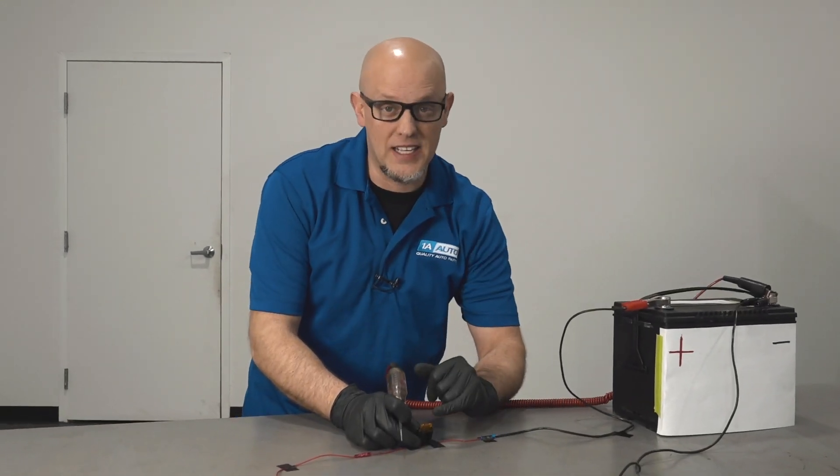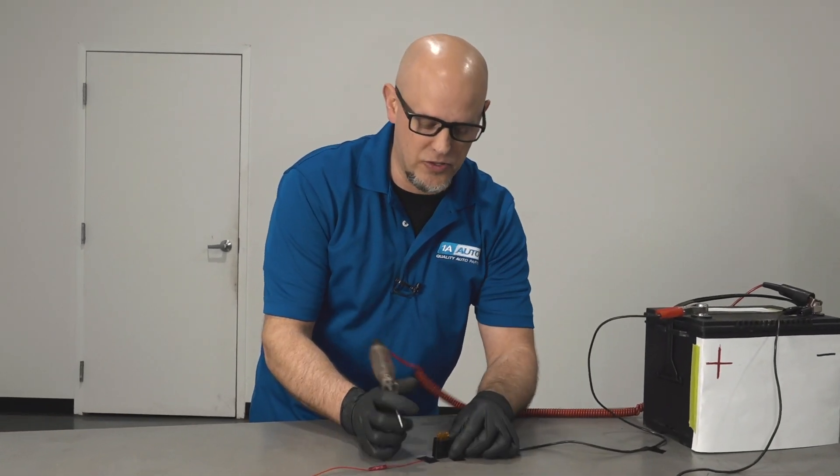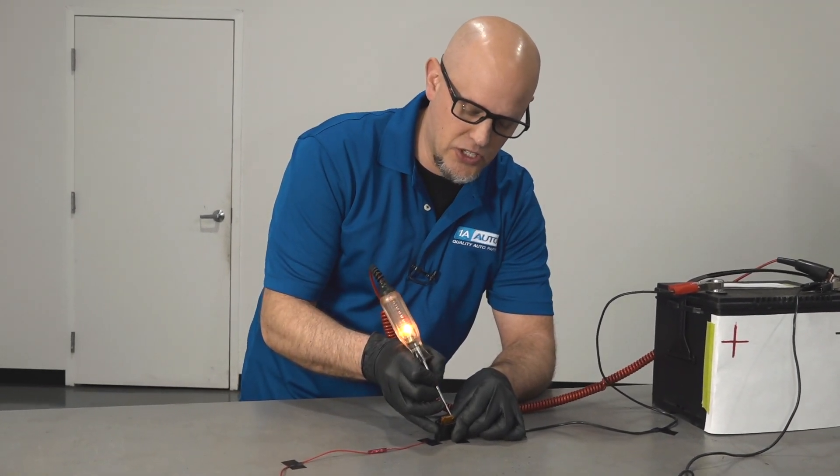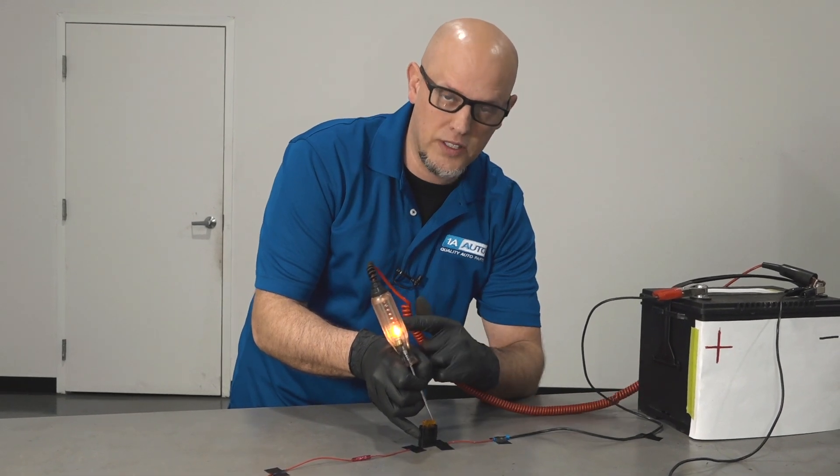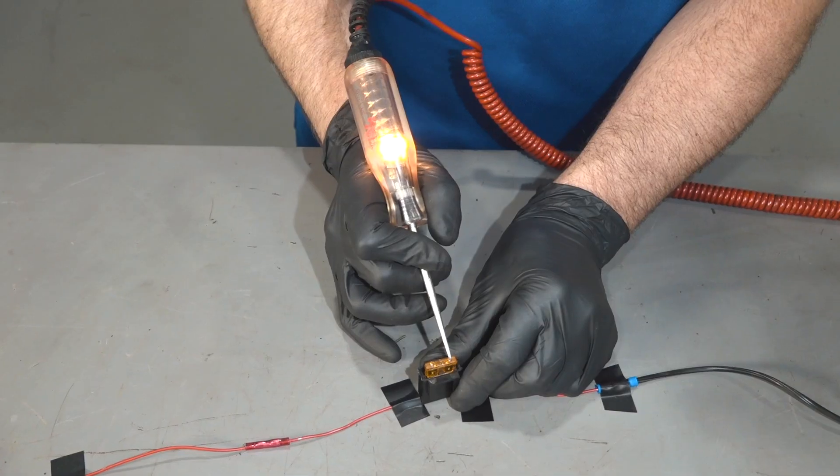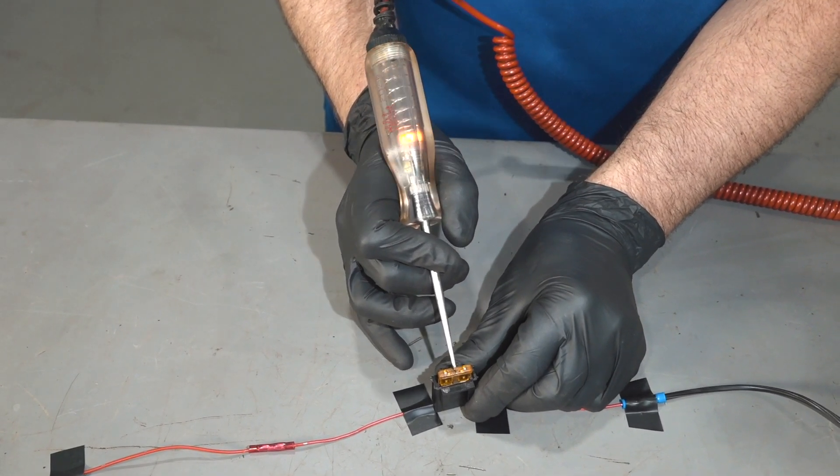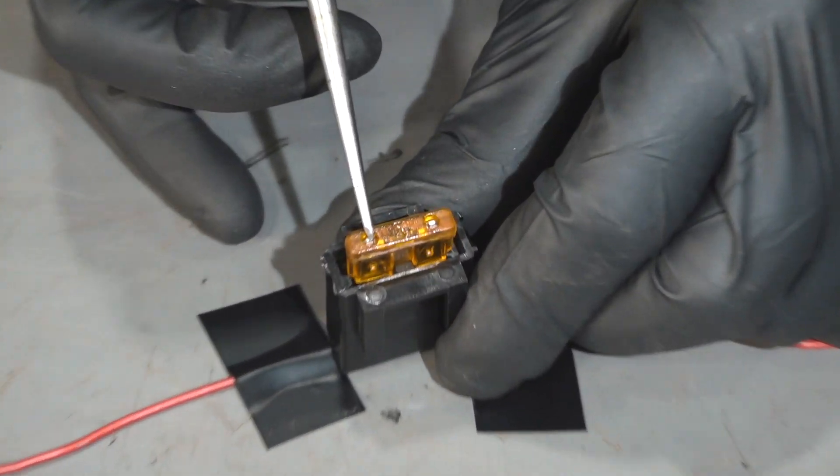When testing a fuse, there are contacts on the top of the fuse. Take the other end of the test light and just touch the contact, and the light worked, but that doesn't mean the fuse is good. You go to the other side of the fuse and make sure it lights up as well, and it didn't light up so we know that fuse is blown.